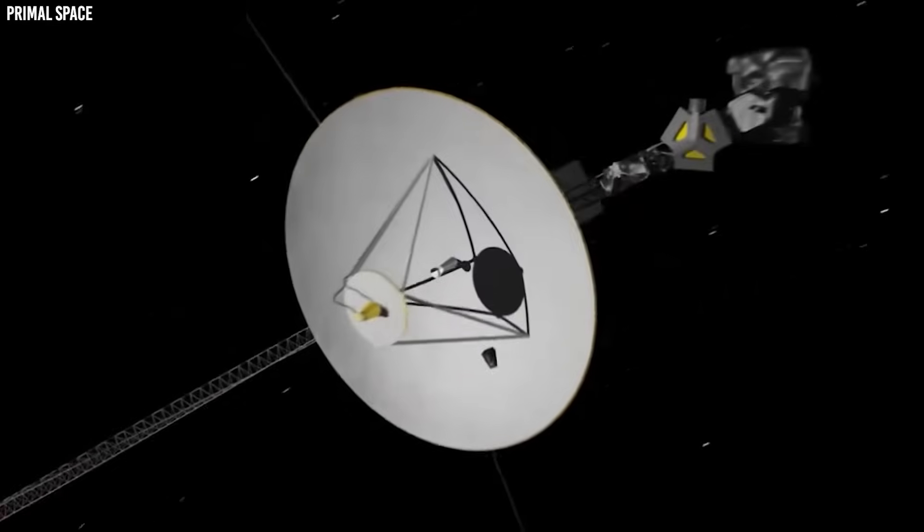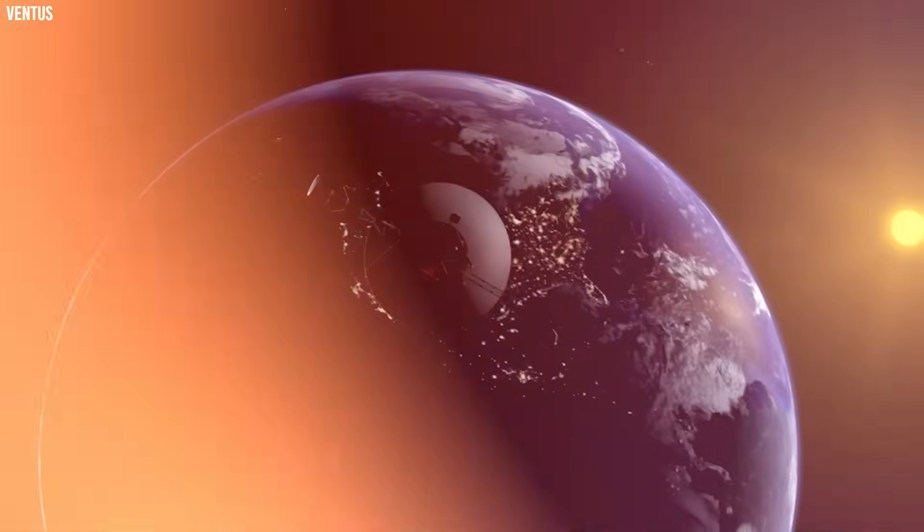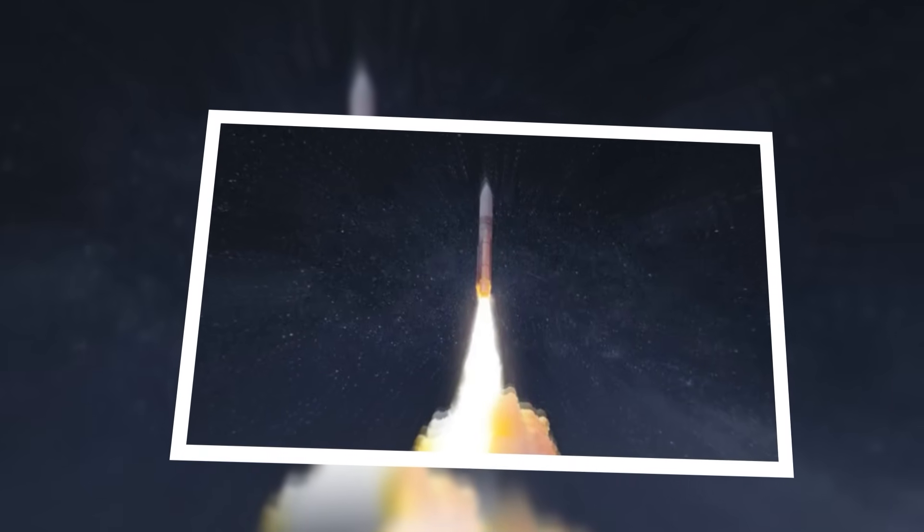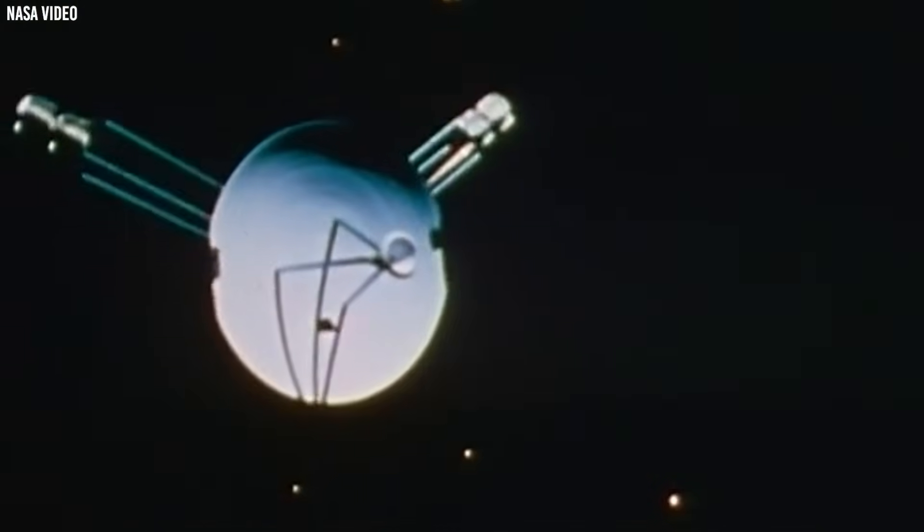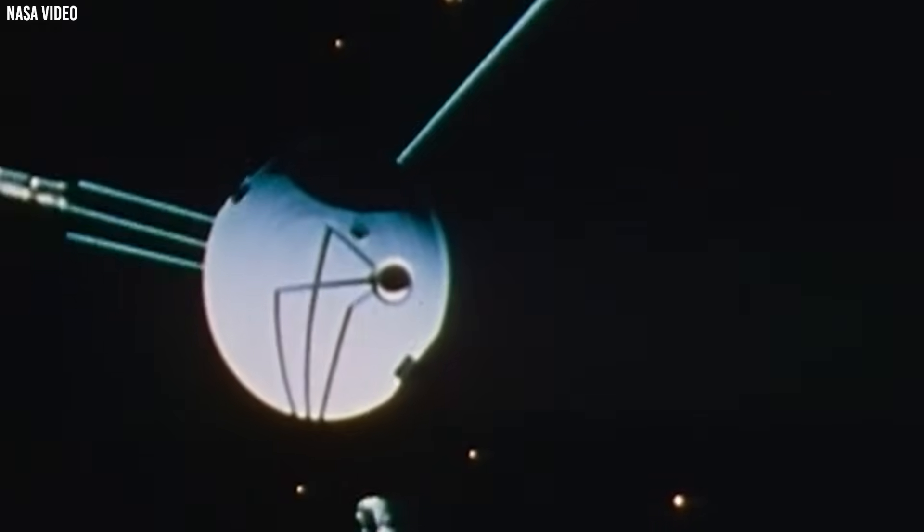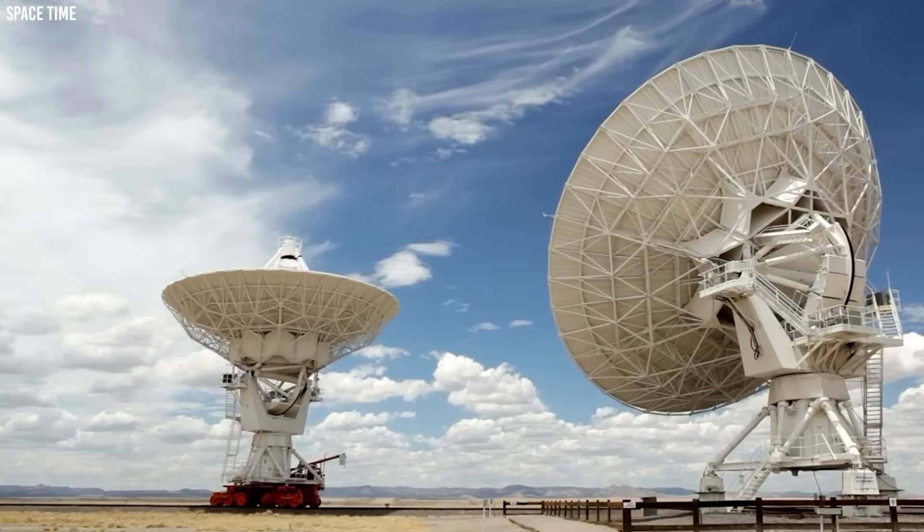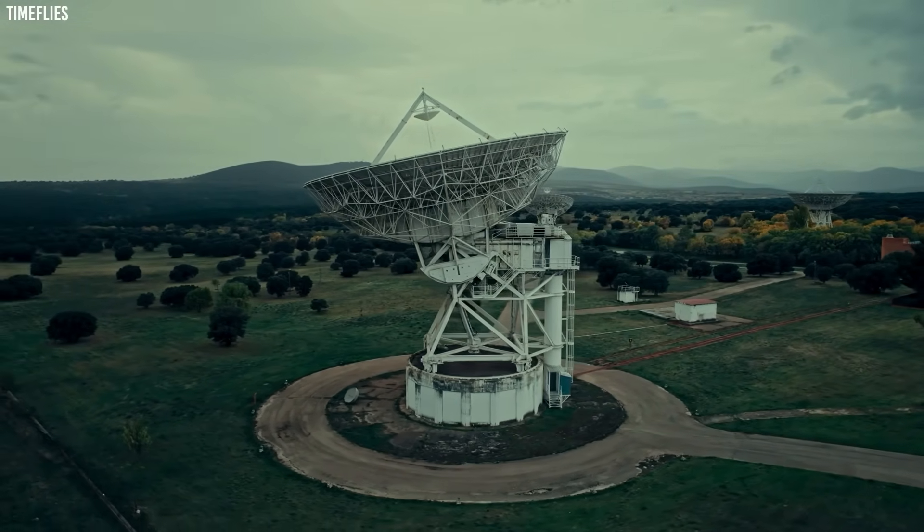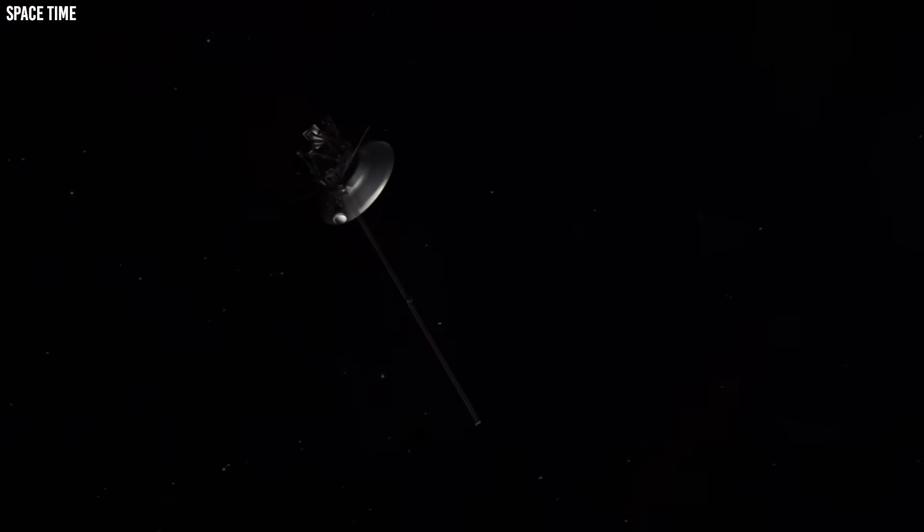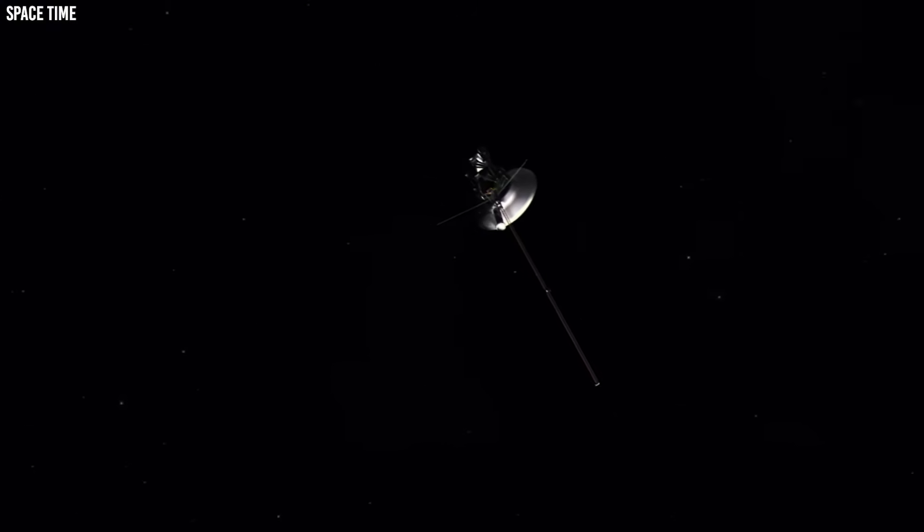Voyager 1 will continue silently coasting through space long after its systems go dark. In about 40,000 years, it will come within 1.6 light-years of the star Gliese 445. Barring an unlikely collision, it will drift through the galaxy for billions of years, perhaps long after humanity has vanished. Its golden record might one day be all that remains of our species. What did Voyager encounter in the void? Why did it shift course? What encoded the patterns in its transmissions? These questions may never be fully answered, but in asking them and following this tiny probe across unimaginable distances, we continue the timeless human pursuit of the unknown. Voyager reminds us that there are wonders in the cosmos we have yet to understand, and that the journey itself is the greatest discovery of all.